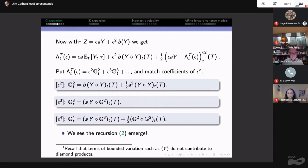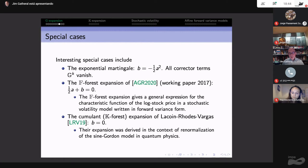Our original F forest expansion comes from setting B equal to not minus a half A squared, but minus a half A, important no square there. This gives a general expression for the characteristic function of the log stock price in the stochastic volatility model written in forward variance form. This expansion respects the total probability condition and the martingale condition at each step in the expansion. Each tree satisfies these conditions. Finally, the cumulant expansion of Lacoin, Rhodes and Vargas that came from physics comes from setting B equal to zero.